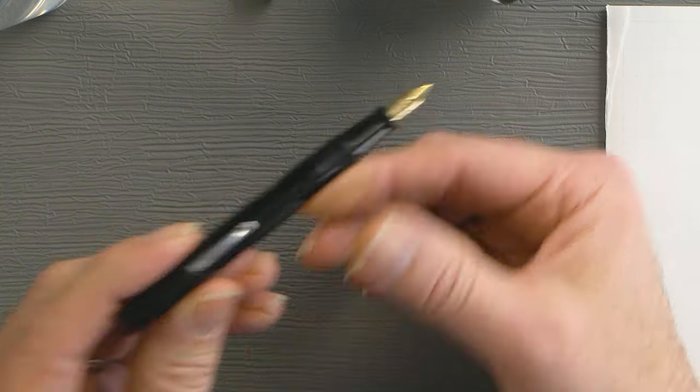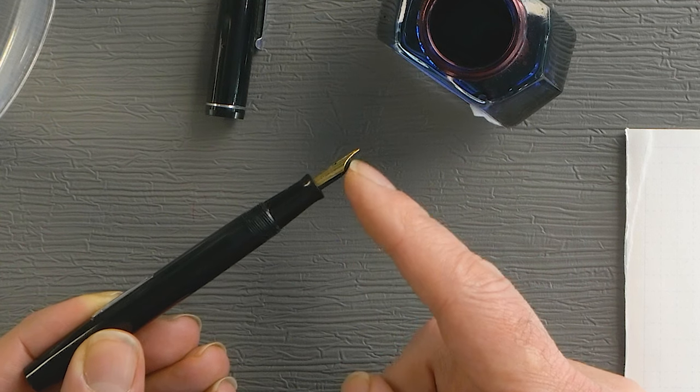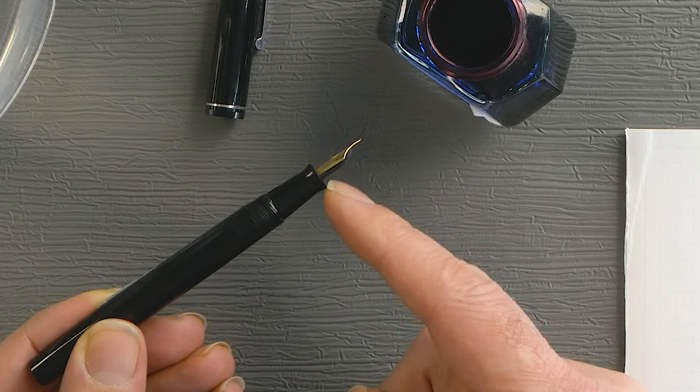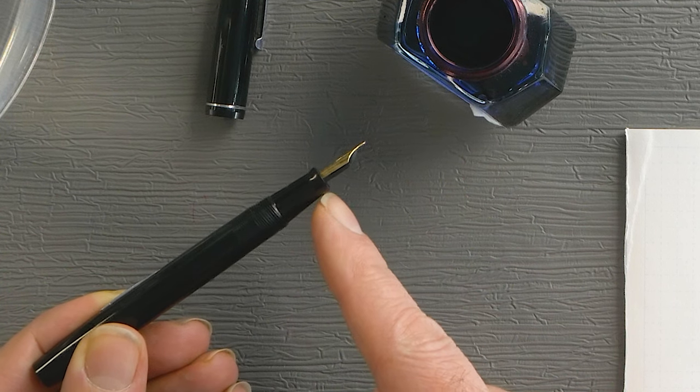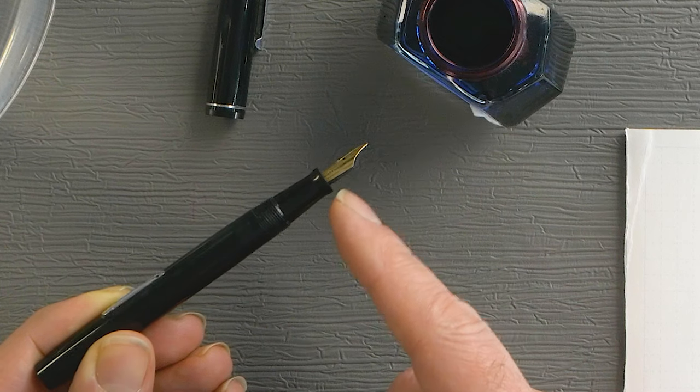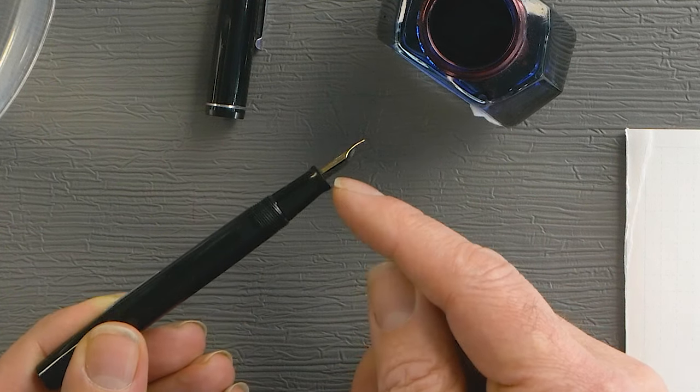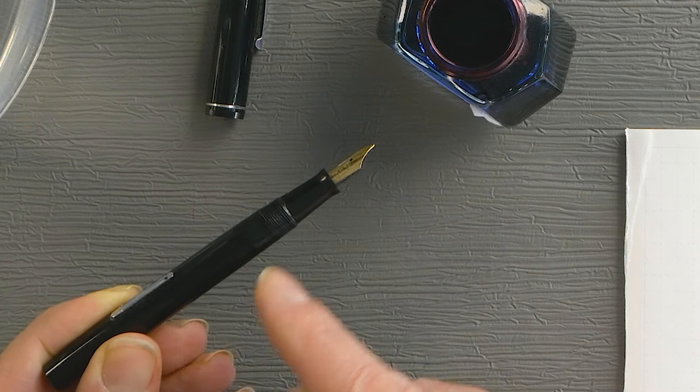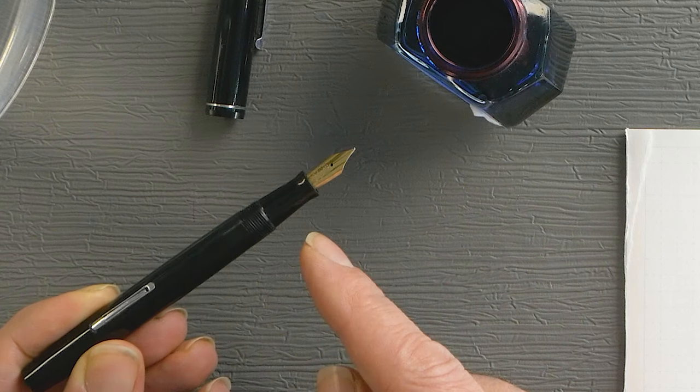So what we want to do is first thing first, we always want to make sure that when we put the pen in ink, we want to put it in ink up to and including a little bit of the section or the grip section. Reason being, if we don't, when we return the lever back to its normal position, we may be sucking up some air. So we want to make sure that the sack is full as fully as possible.